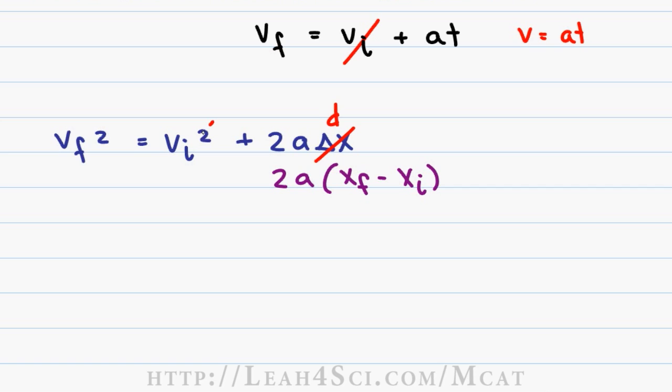Once again, if your initial velocity is zero, that drops out giving you a simplified version of the equation, v_f² = 2aΔx or even more simplified, v² = 2at. I don't like this form of the equation. I especially don't like when we're not specifying v_f but you may see it this way so recognize that it is the same thing.